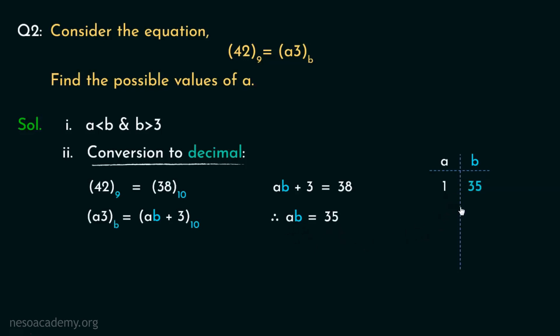Since a times b is 35, if a is 1, then b must be 35. Then again, if a is 5, then b should be 7 because 5 times 7 is 35 as well. Inversely, if a is 7, then b must be 5. And if a is 35, then b should be 1. This is also a possibility. Now, from the conditions, b should be greater than 3. So, from all these sets, these three seem to be the correct possible values. But wait! Not so fast. We have got another condition to check. a should also be less than b. And this particular set doesn't agree with that. So, the possible values of a are 1 and 5.